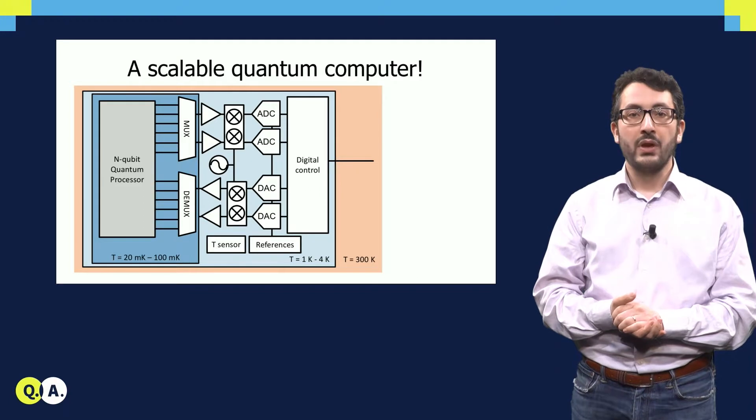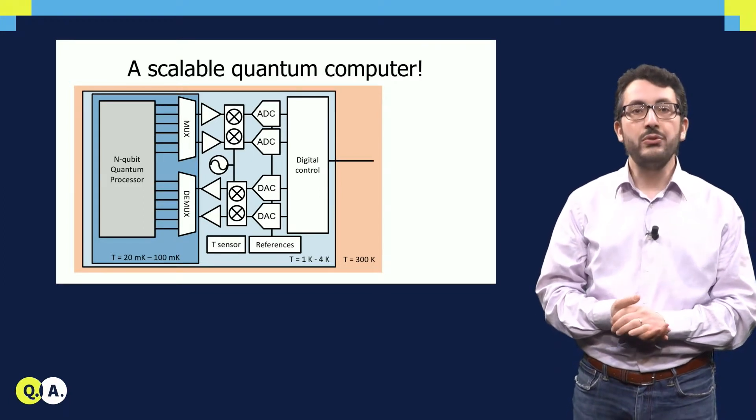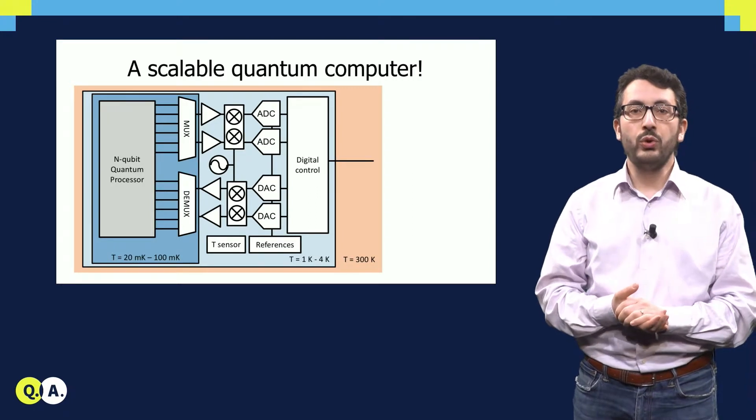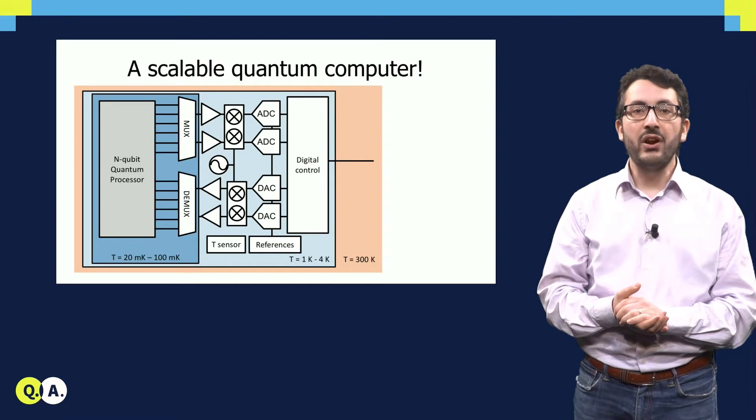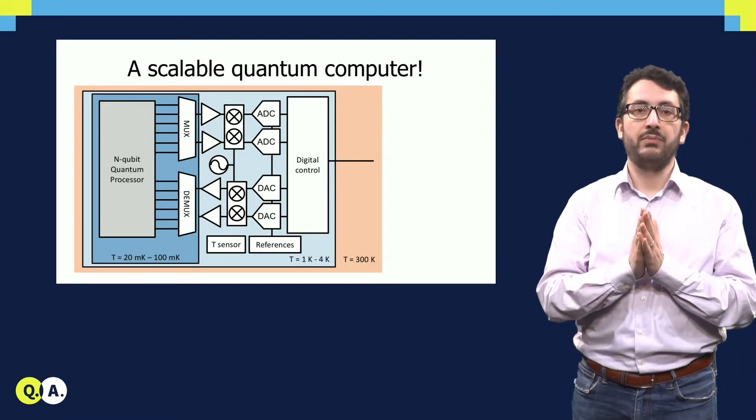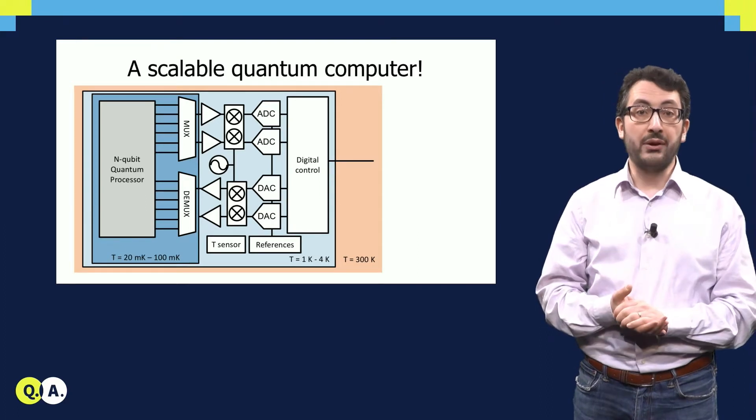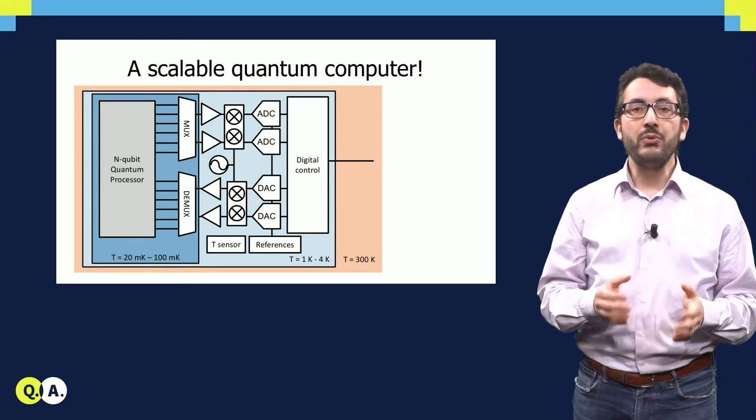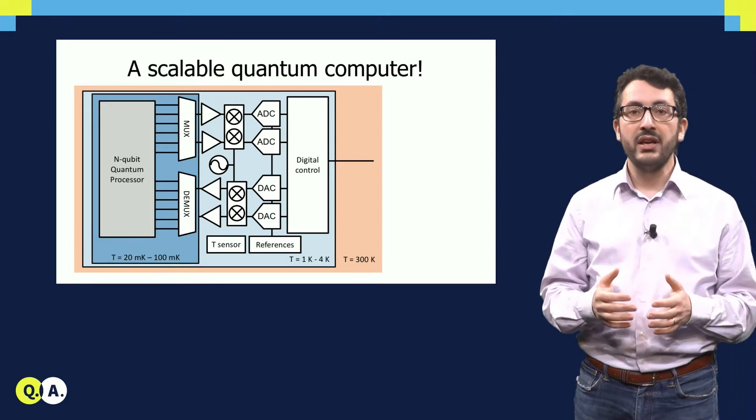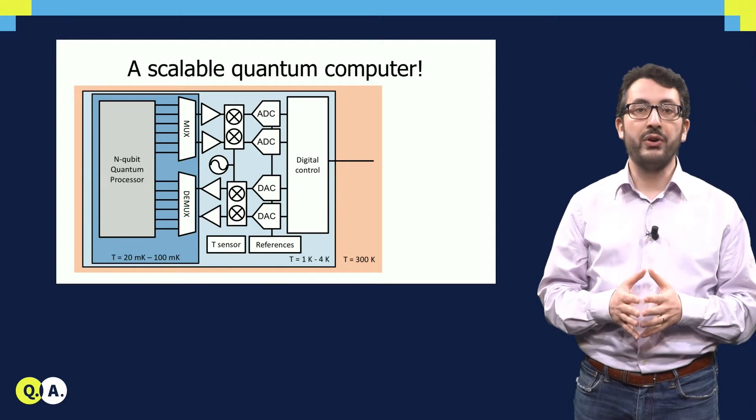Our approach is to bring the electronics very close to the quantum processor. Here you see the quantum processor cooled to a temperature between 20 and 100 mK, and the electronics placed very close to it. So on the top part of the figure, you see the electronics that we use to read out. So you see some amplification, some frequency conversion, and then you need to convert these analog signals to the digital domain through analog to digital converters, or ADCs.